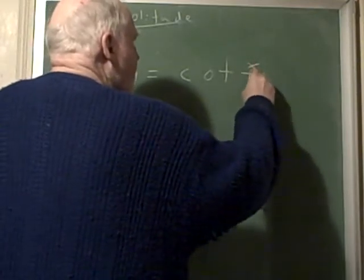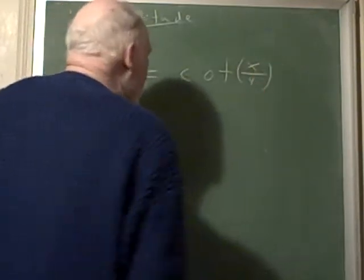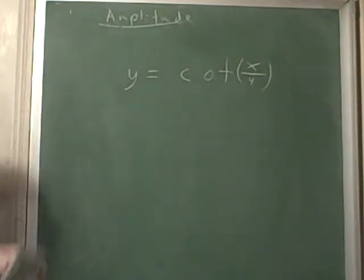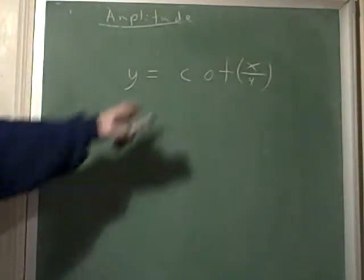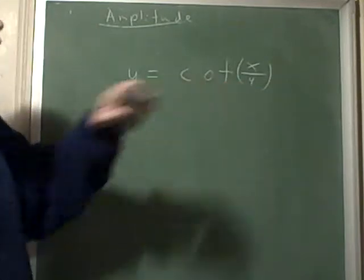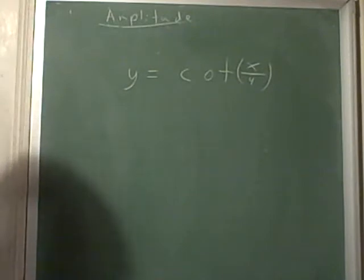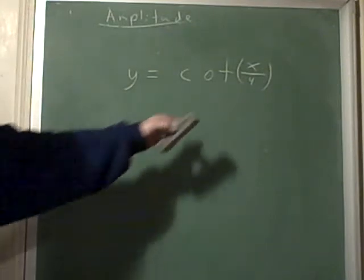This one is actually slowing the thing down, making the period much bigger. Where the period would normally be pi, it is now 4 pi in size because it's slowing the x down.